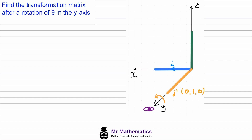When we rotate i, we go clockwise by theta degrees. This is our transformed image of i, with an x value of the adjacent length of this triangle, so cos theta, and a z value given by the opposite length, but because it's below the origin this will be negative sine theta. So the transformed image of i will be (cos theta, 0, negative sine theta).